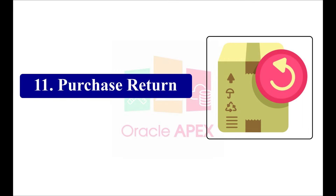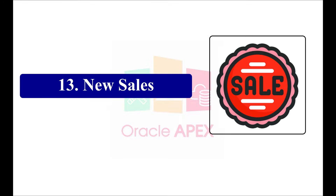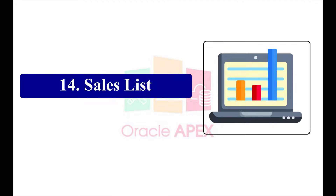Number eleven is purchase return — sometimes you have to return a product to your supplier if there is any problem, so this module is useful for that. Number twelve is coupon — here you can offer deals to your customers. Number thirteen is new sales — you enter here what products your customer buys and make a bill and invoice from this module.